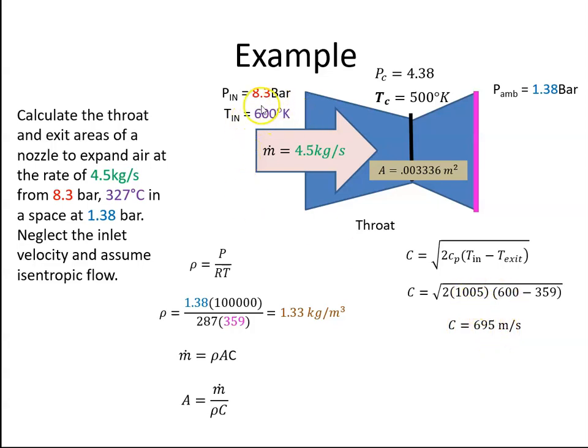So that's the 600 degrees Kelvin, that's the 359, which we calculated just there a few minutes ago. And now I can plug the values in. So there's my 1.33, there's my density. There's my 695. The mass flow is constant, and we get an area of 0.0048 meters squared. So we can see that that was 0.003, this is 0.004. So you can see this converging, diverging nozzle.